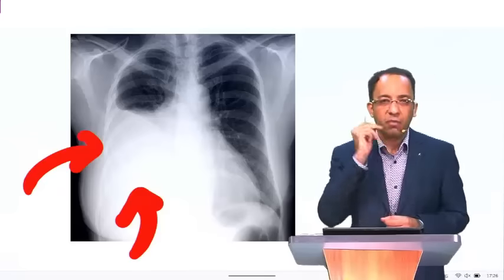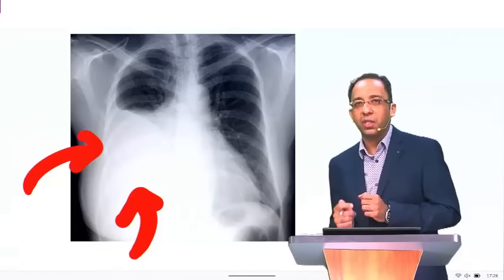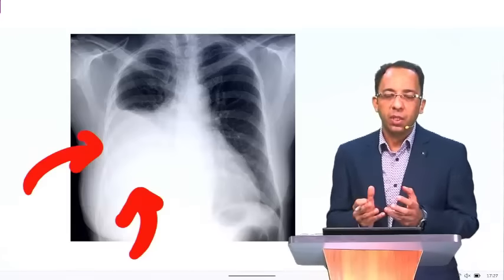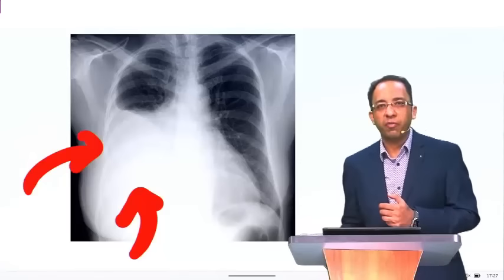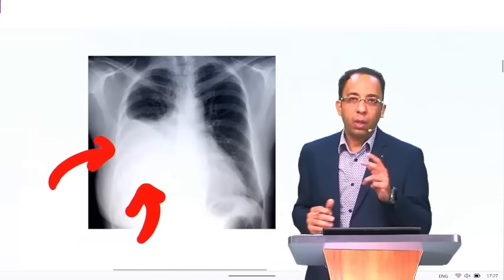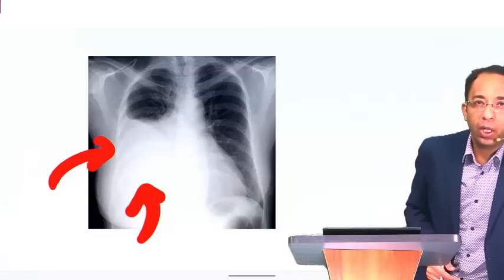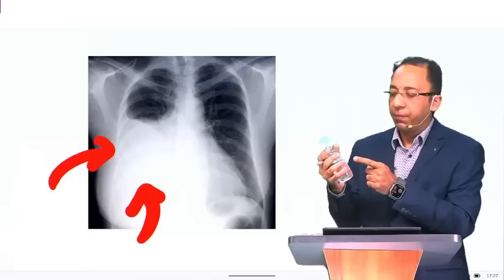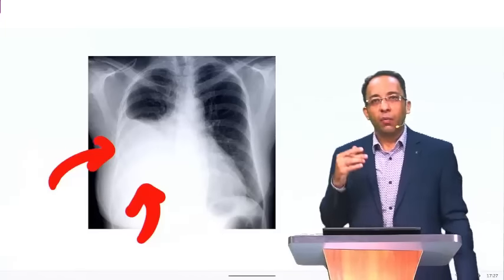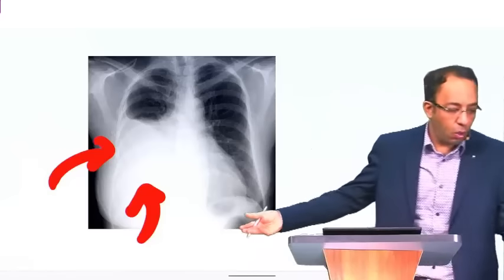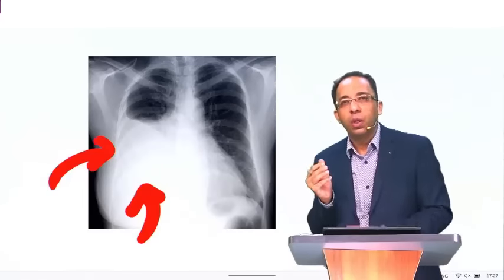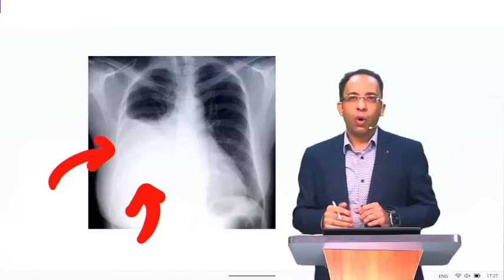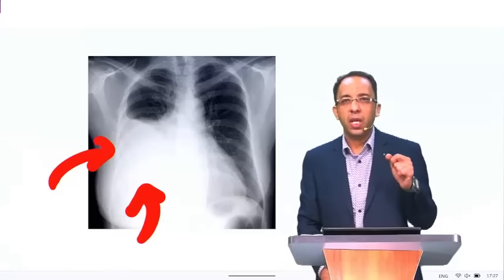If a disease is having more air, it will be more black — we say more lucent. If a disease is having fluid or soft tissue, it will be opaque. Now, is it fluid or not? I want you to think of a bottle of water — you have air and fluid. Water has a property: it will go down. Air has a property: it will go up. So where should you see fluid in the body? You will see it in the most dependent recess. The most dependent recess of the pleural cavity is the costophrenic recess.